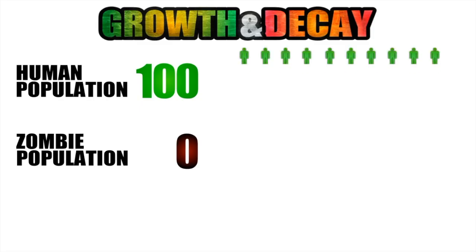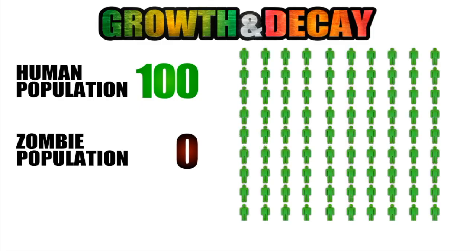So we can visually model this population of 100 humans using a grid with a length of 10 and a height of 10. So this 10 by 10 grid represents 100 normal human beings.